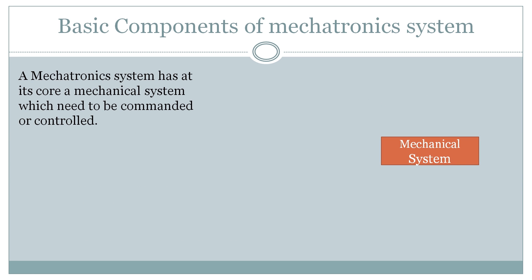Let's start with the basic components of a mechatronics system. At its core is a mechanical system which needs to be commanded and controlled. The mechatronics system is essentially a mechanical system that we have to control and command, and for that we design the mechatronics system. Examples include a vehicle braking system, a positioning table, or an assembly machine.